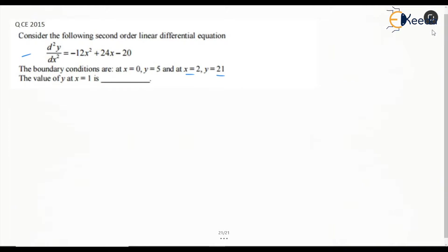This is a second order derivative. If we integrate it twice, we will get two constants, and using these two boundary conditions, we can find all these constants and then find the value of y at x=1.